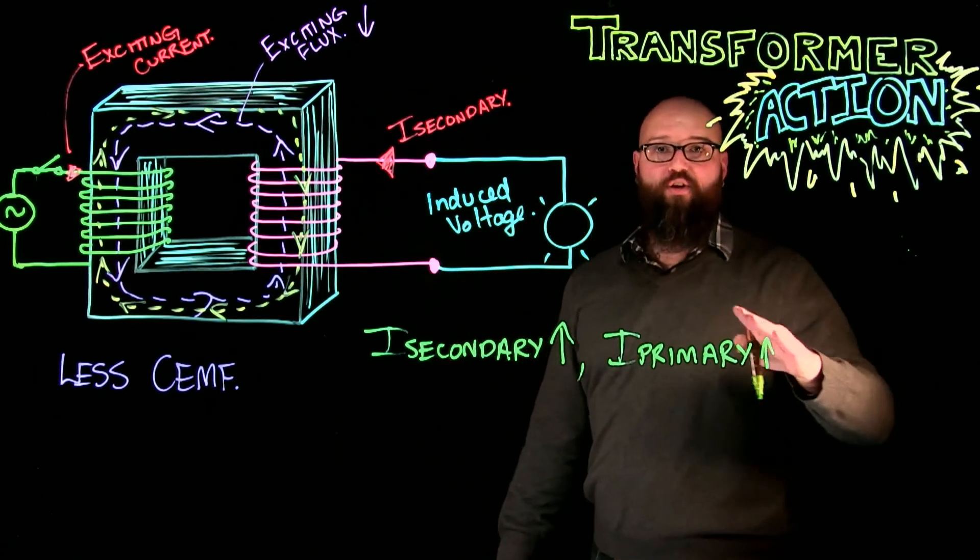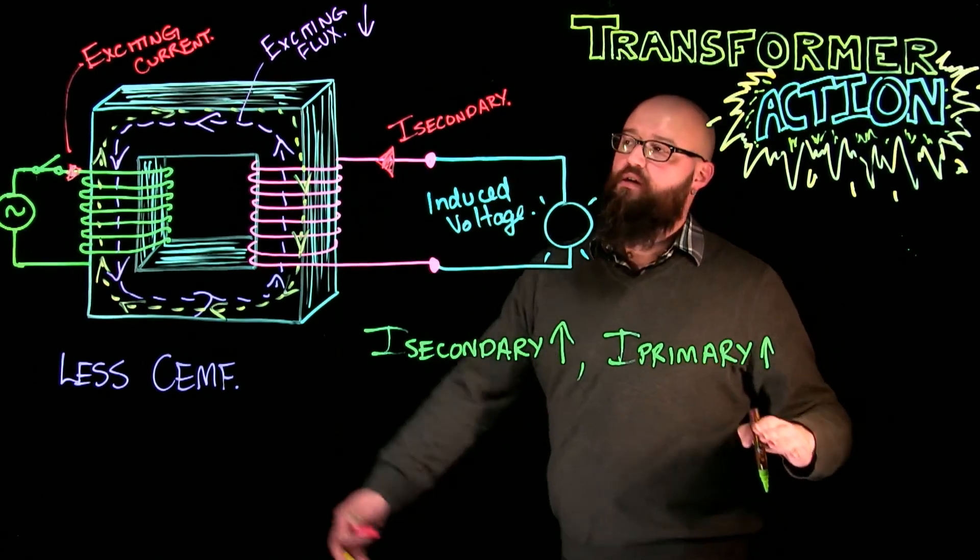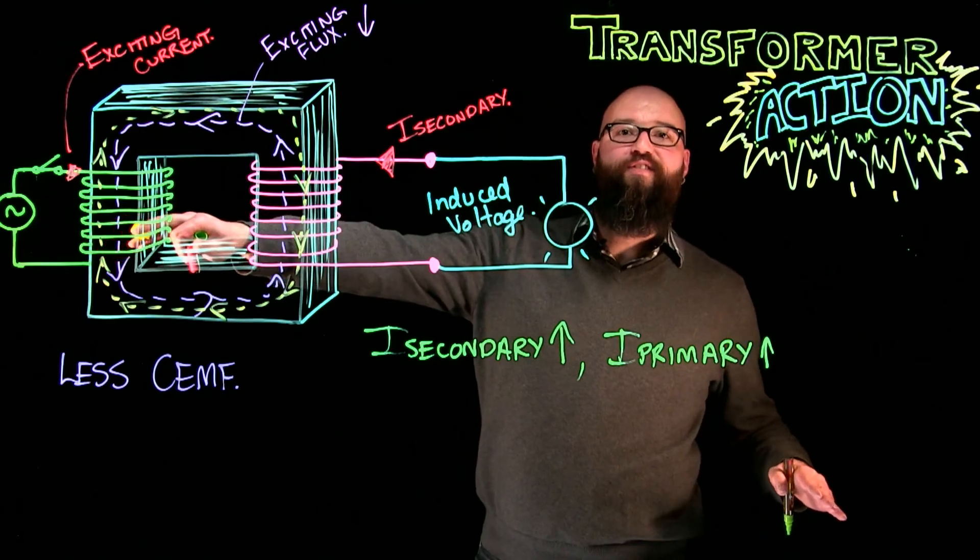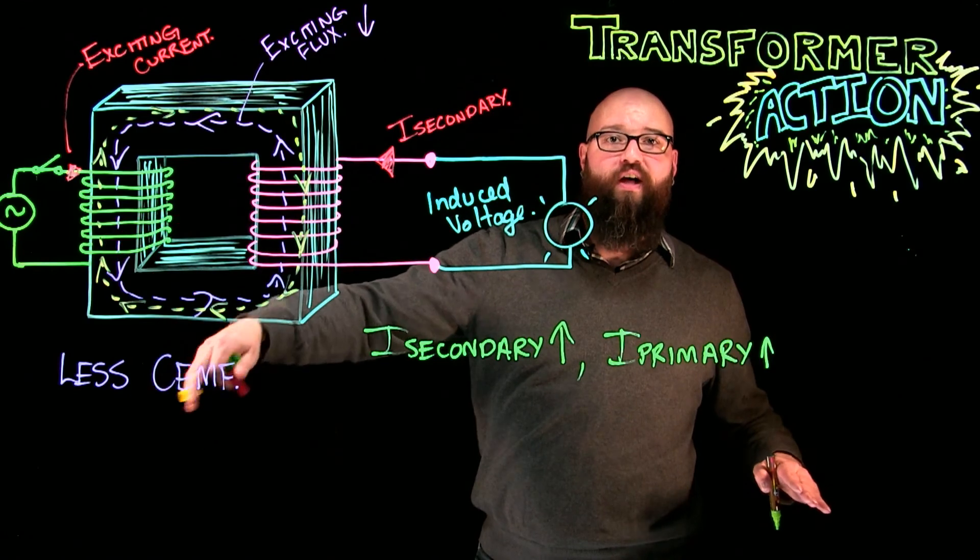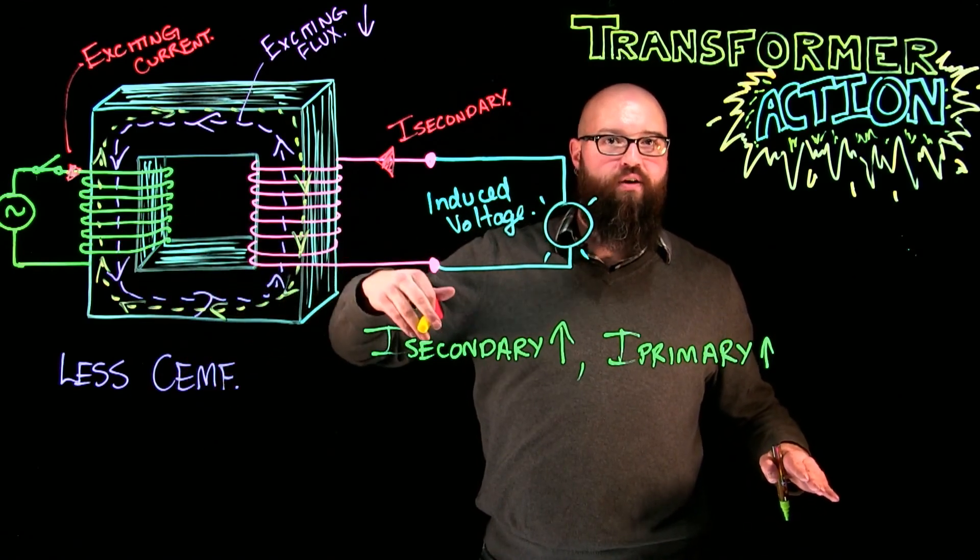Now, as the current on the primary increases, the exciting flux will increase as well. Now, re-establishing that counter-EMF to a value where VA in equals VA out again.